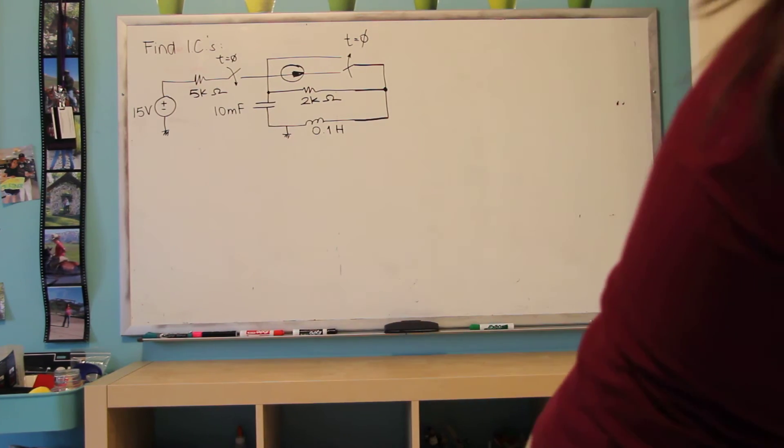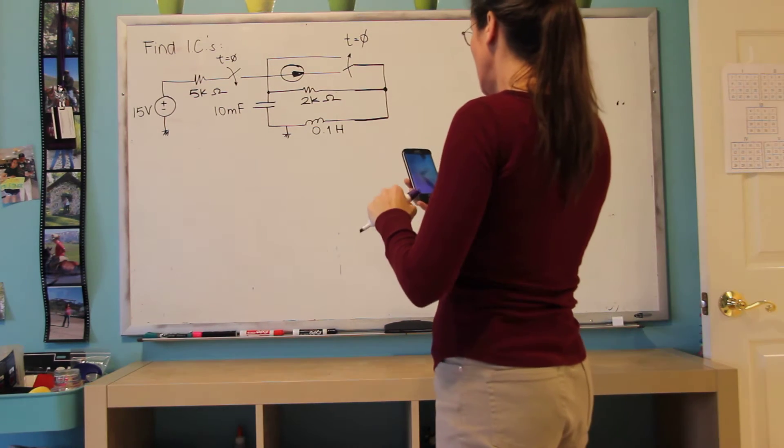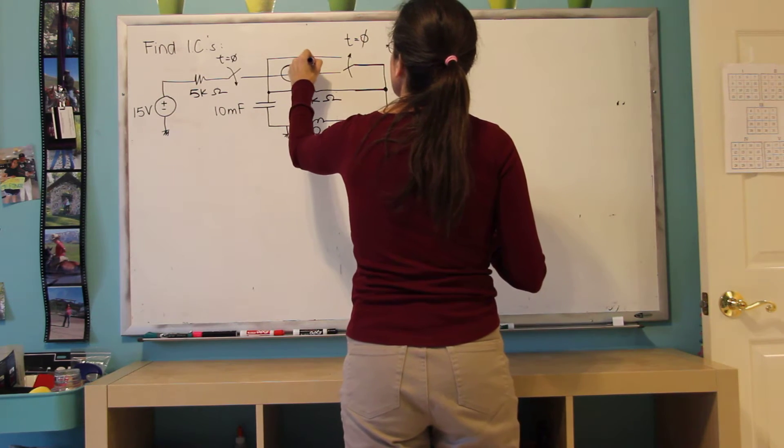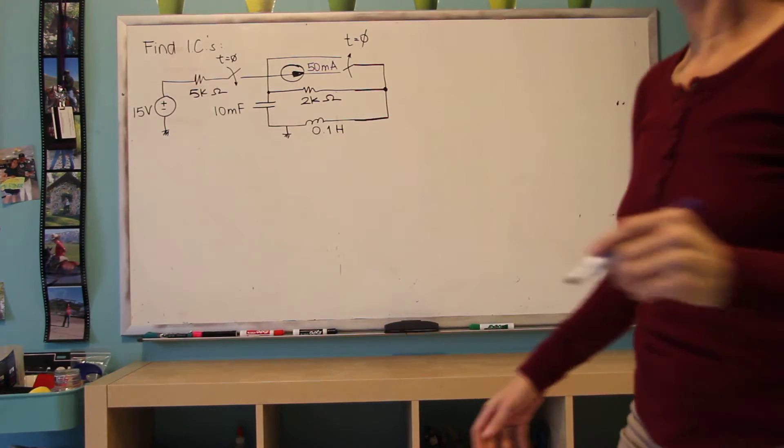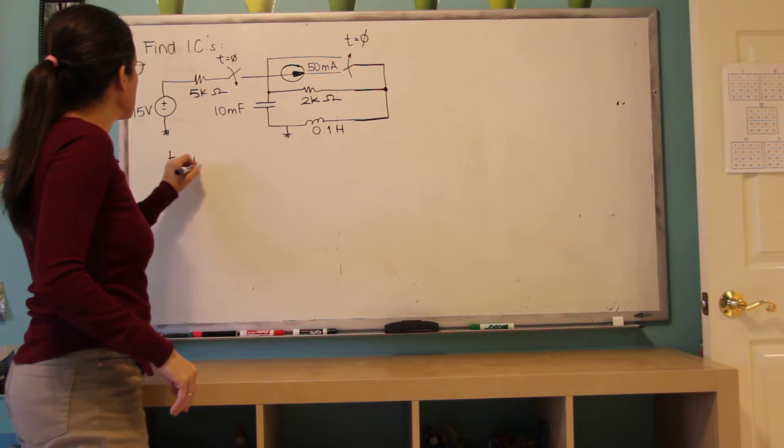Let's see, I don't know what this one is. Let me take a look. This is 15 milliamps. And there are two switches here. So we need to find IL and VC for T less than zero.